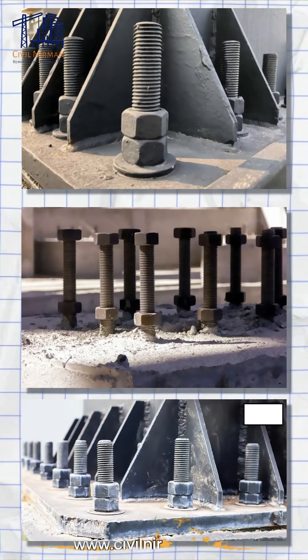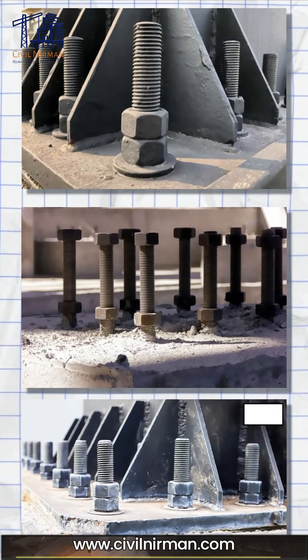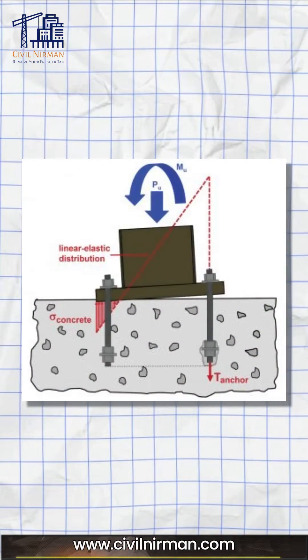Anchor bolts are used to connect structural and non-structural elements to the concrete. Anchor bolts are needed for all the base plates to prevent the column from overturning and to resist uplift for large movements.